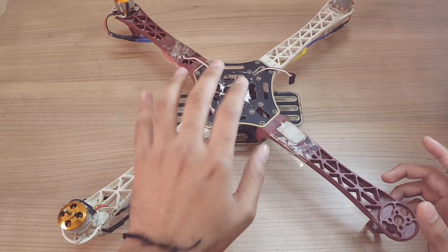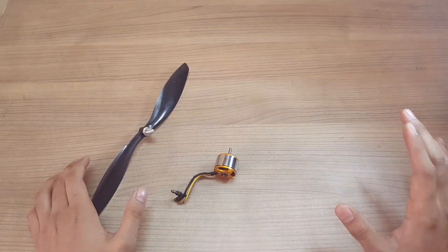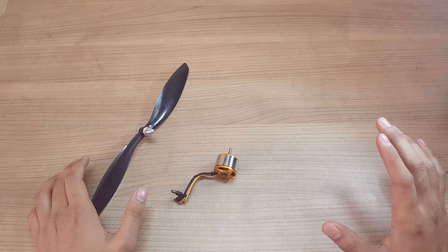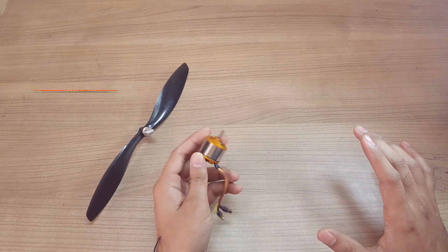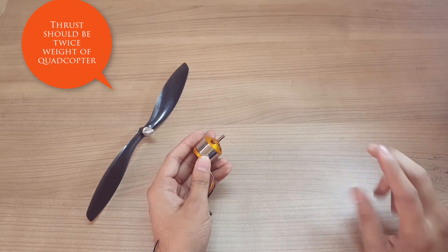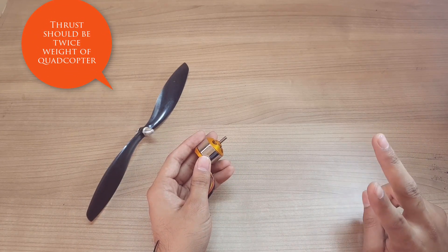There is a thumb rule in the case of choosing the motor. The thrust generated by the brushless DC motor should be twice the weight of your quadcopter.